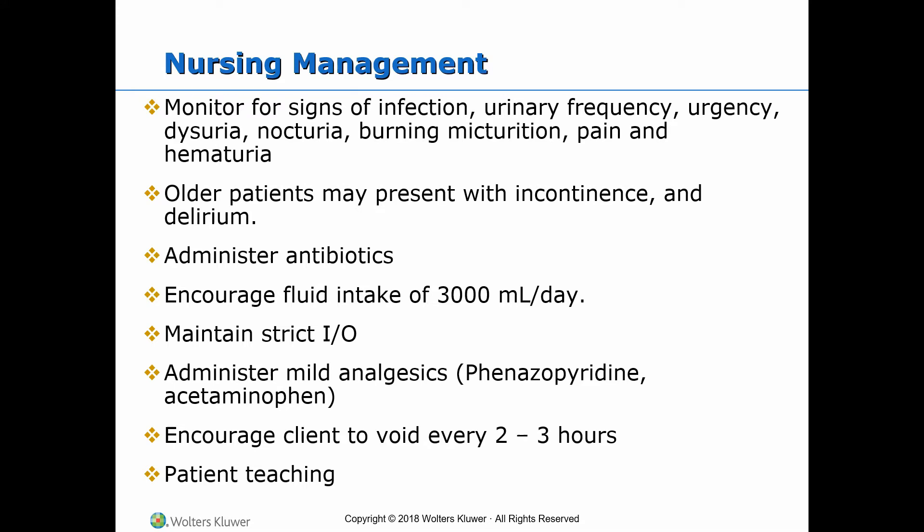Complications of UTI include upper UTI, chronic pyelonephritis, formation of renal calculi, sepsis, and end-stage kidney disease. Older patients may present with incontinence and delirium. Administer antibiotics specific to the infectious agent; it is important to keep blood levels constant, so antibiotics must be taken on time and doses must not be skipped. Increase fluid intake to 3000 ml per day, maintain strict intake and output, and administer mild analgesics like phenazopyridine or acetaminophen. Encourage the client to void every two to three hours.